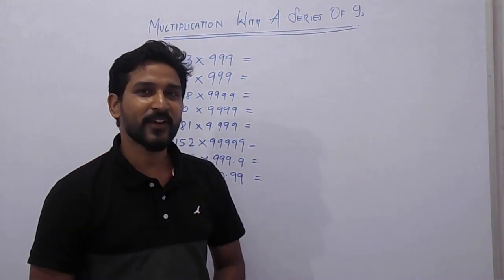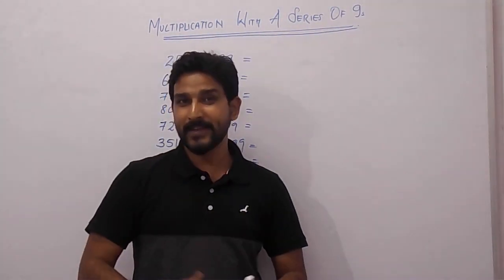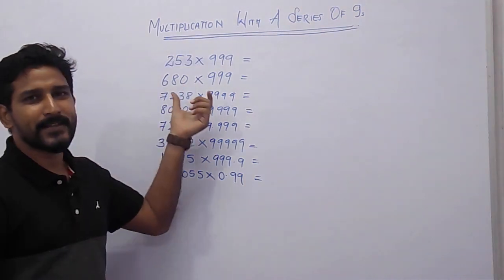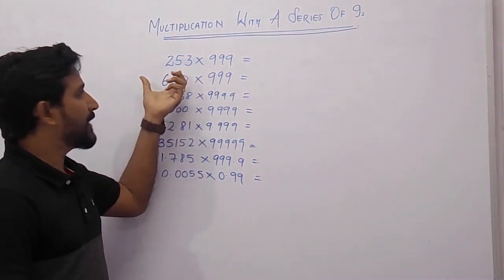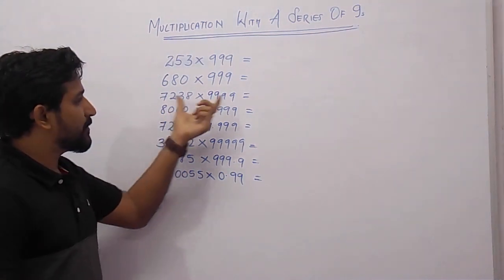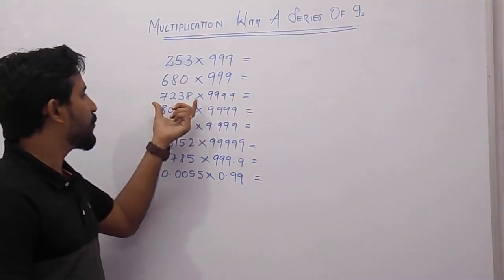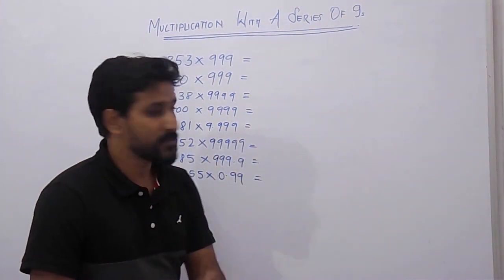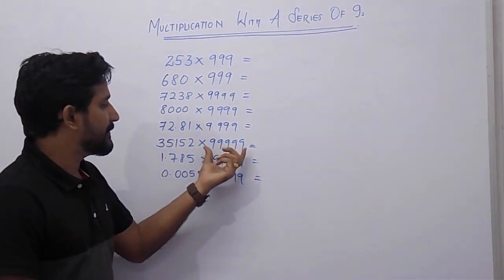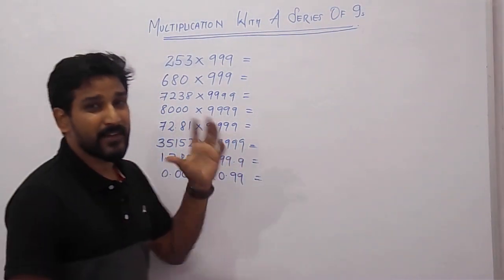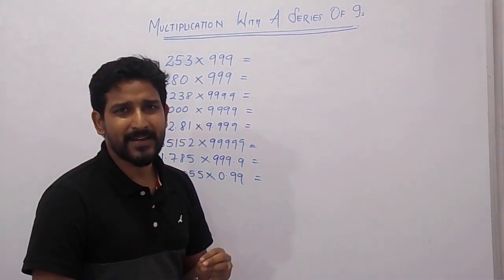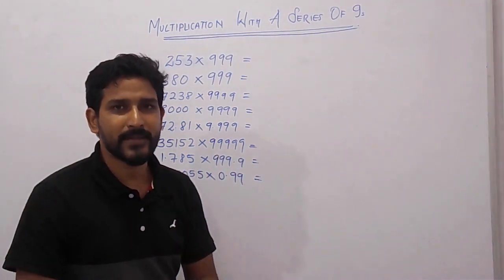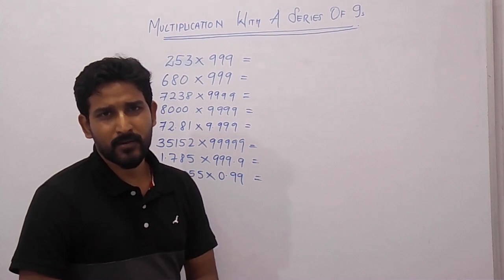Hello, welcome to Wisdom and Channel. Today we are going to see one of the tricks of multiplication — that is multiplication with a series of nines. For example, you want to multiply any 3-digit number with 999 (three nines), or a 4-digit number with 9999, or a 2-digit number with 99, or a 5-digit number with 99999. This trick is very simple and takes just 2 seconds to solve, and is very helpful in competitive exams or school and board examinations.